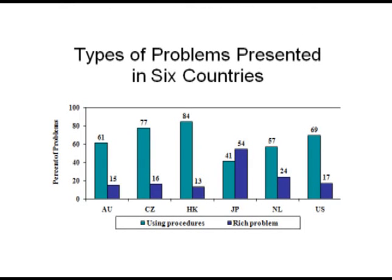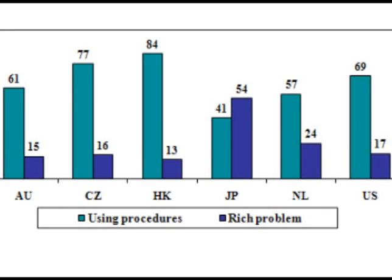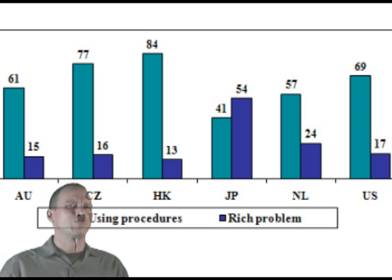In this graph, the column on the left represents an estimate of the time these different countries spend on questions that are procedural in nature, while the column on the right represents the time they spend on questions that are rich in nature. Notice that Hong Kong and Japan, the two top-achieving countries, look very different. Japanese students spend more than half their time working on rich problems, but this is not the case for Hong Kong, whose students also do very well.